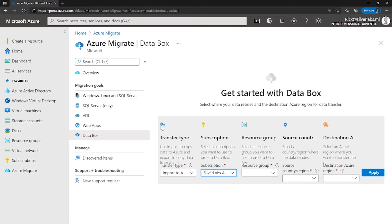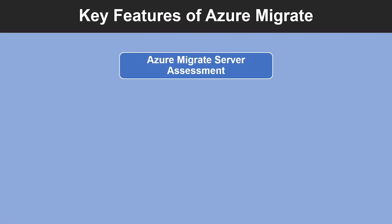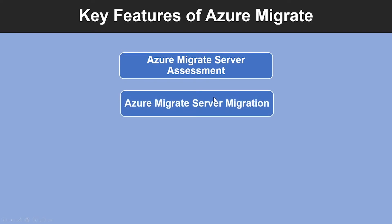Let's look at the key features. You can use a single portal to start, run, and track your migration journey to Azure. Azure Migrate offers a range of tools to help you migrate your servers, databases, and more. The first key feature is server assessment — you can use the Azure Migrate server assessment tool to assess VMware VMs and Hyper-V VMs for migration to Azure, as well as using other Azure services and third-party ISV tools.